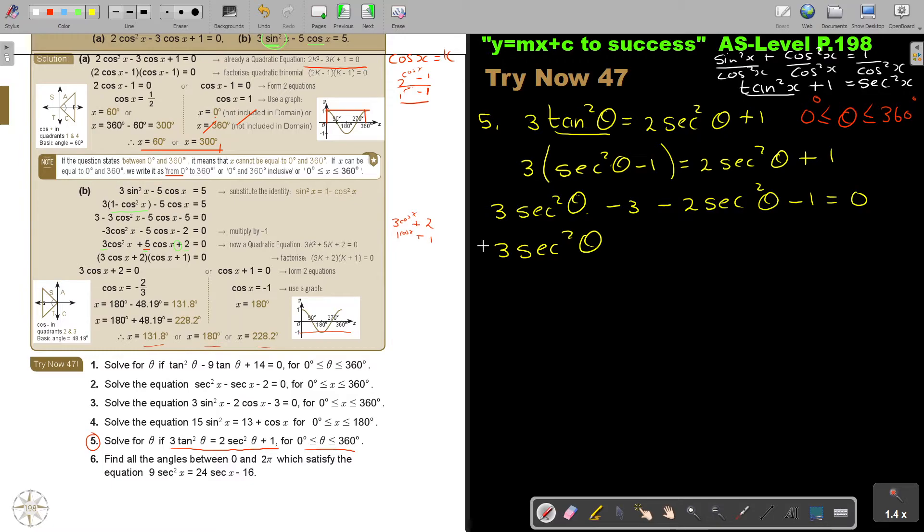What do I end up with? 3 sec squared theta, so this is going to be minus 2 sec squared theta. Now, I can already simplify this one. I can already simplify. I'm thinking that I will now get a trinomial. Now, I realize, this is the same. This is the same. So, I'm getting 3, so it's sec squared theta minus 4 equals 0.